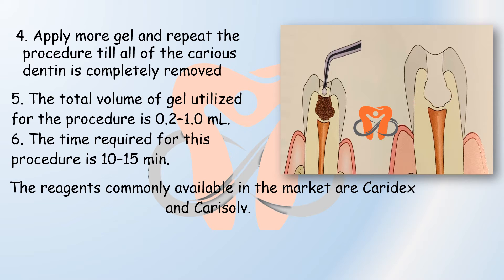We apply more gel and repeat the procedure until all of the caries dentine is removed. The total volume of gel utilized is 0.2 to 1 milliliter, and the time required for the procedure is 10 to 15 minutes. The reagents commonly available in the market for this procedure are Caridex and Carisolv. Various studies have shown that although caries removal with a burr is quicker, it over-prepares the cavities, whereas in chemomechanical caries removal, although the procedure is slower, it removes adequate quantities of the caries tissue.